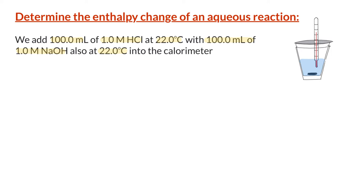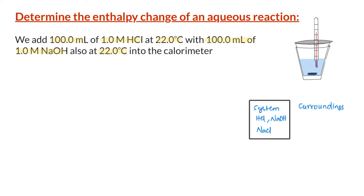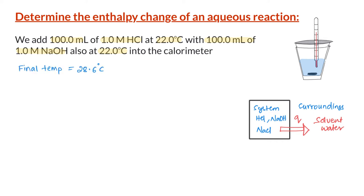The hydrochloric acid reacts with sodium hydroxide and releases heat. The heat from the system — which is reactants and products — is transferred into the immediate surroundings, that is the solvent of the reaction, which is water. Therefore, the temperature of the water increases, and the increase in temperature can be monitored by the thermometer. After the reaction is complete, the final temperature of water is observed to be 28.6 degrees Celsius.